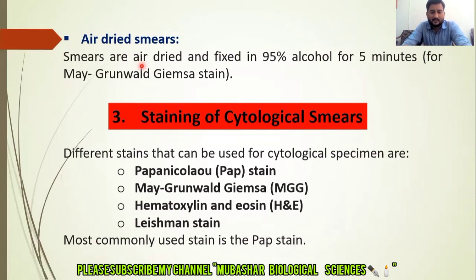The third step of cytological preparation is staining. Different types of staining are used for cytological purposes, including Papanicolaou stain, Magrunewald, Giemsa stain, Hematoxylin and Eosin stain, and Leishman stain. The most commonly used stain is the Papanicolaou stain.